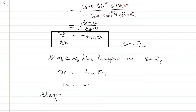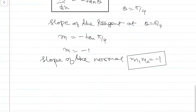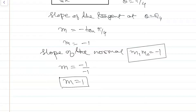Now we find the slope of the normal. We know that m1 × m2 = -1 if two lines are perpendicular to each other. The slope of the normal is equal to the negative reciprocal of the slope of the tangent: slope of normal = -1/(-1) = 1. This is the answer.